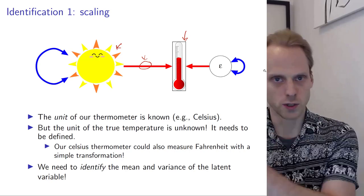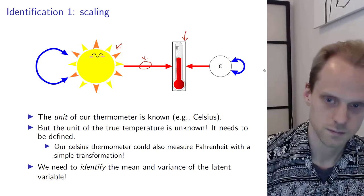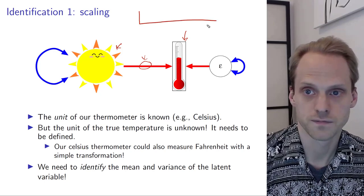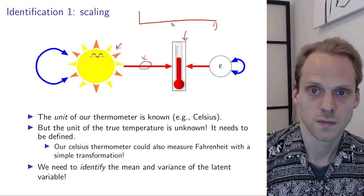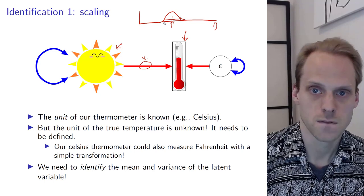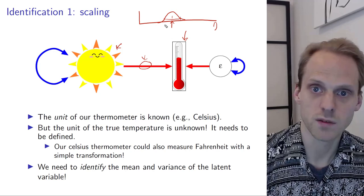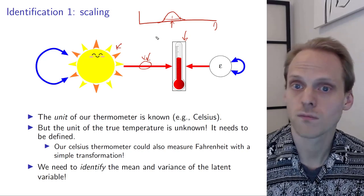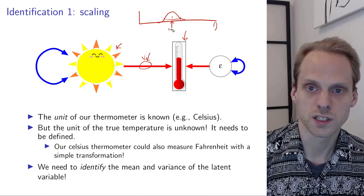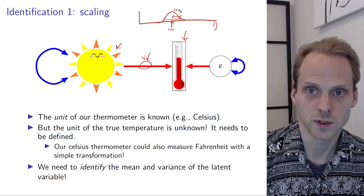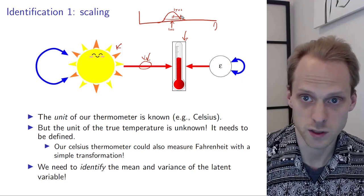We need to place the distribution of the latent variable somewhere. We need to specify the mean and the variance of the latent variable — set a center point for the distribution and set the width of the distribution, so we can define where eta is. For example, in IQ this is set to a mean of 100 and a standard deviation of 15. That area of two standard deviations covers 95% of the distribution. Normally we don't know a unit, and this is true not only for our construct but for everything we want to measure.